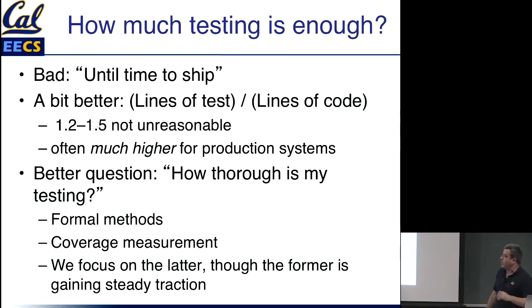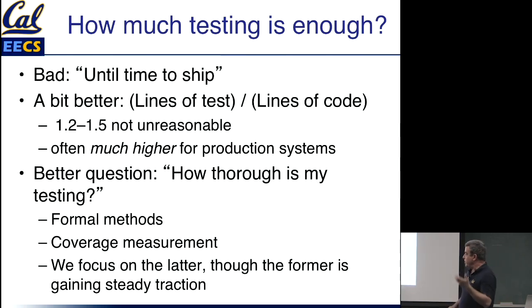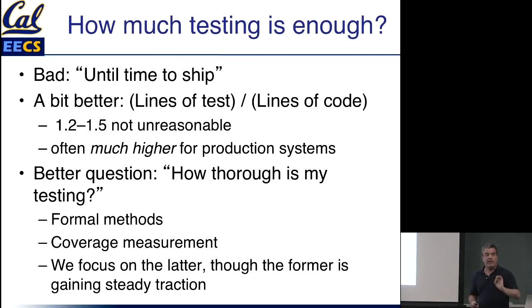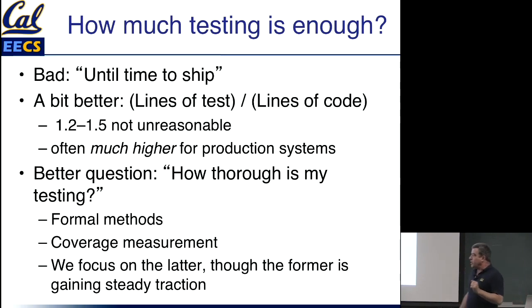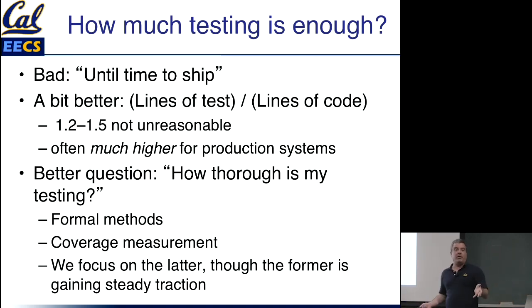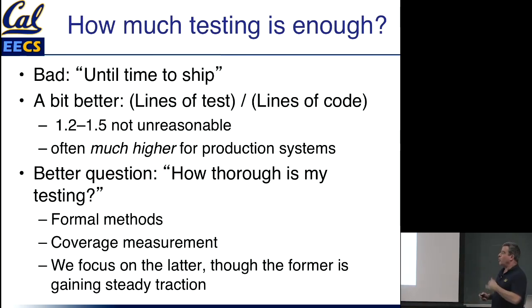A better question might be: can I evaluate — either through some formal method, like proving what aspects of the app are being exercised by certain tests without even executing them, or through empirical means — how much of the app's functionality is probably being exercised by tests? We're going to focus mostly on non-formal, empirical methods, meaning we won't prove things about behavior coverage, but we can measure, in general, how much of the app's functionality is likely being exercised.